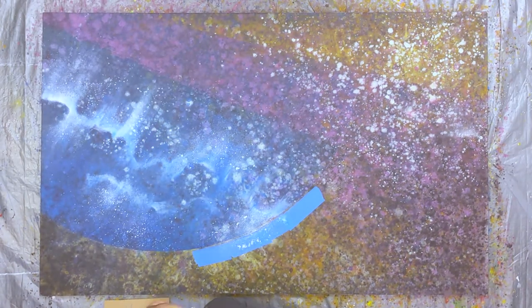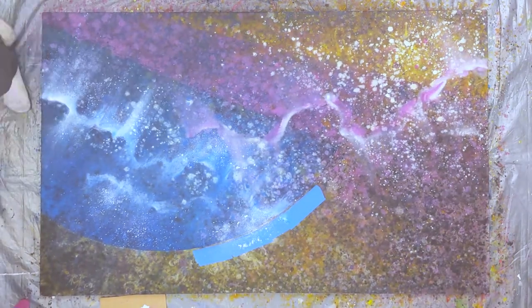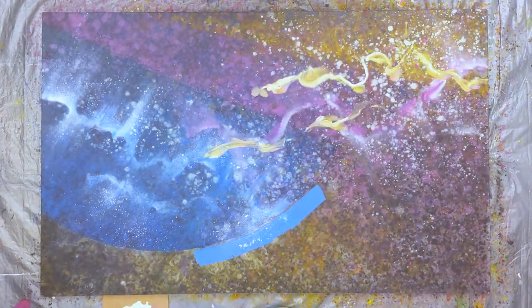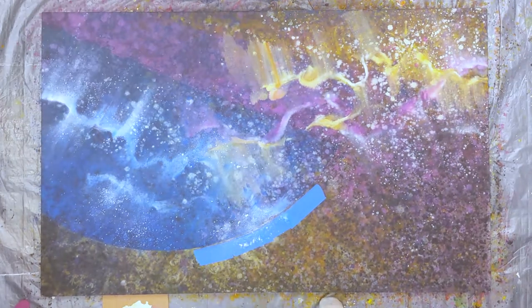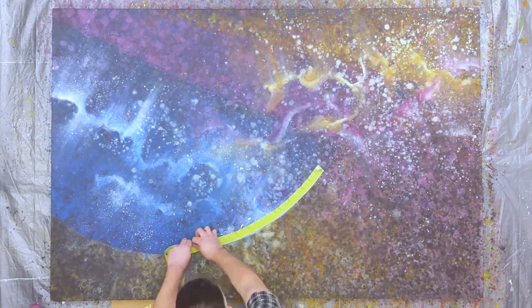I switch to magenta and white, repeating this aurora borealis look and feel, followed by a combination of yellow and white. This space scape is really starting to spread its wings a bit.